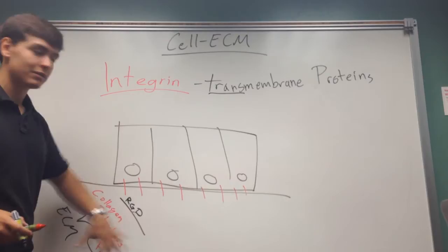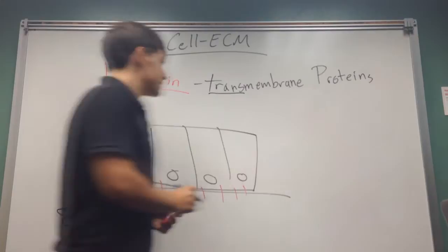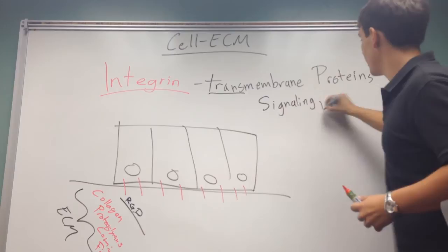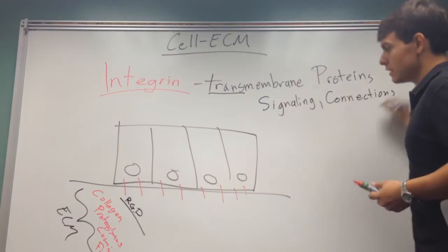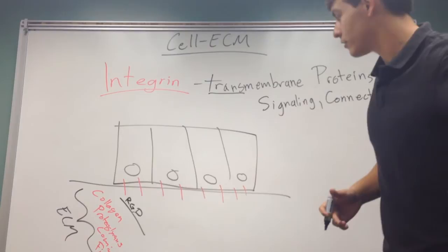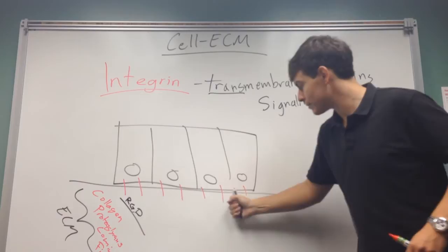But, integrin are transmembrane proteins that help signaling as well as just connection. So, collagen and fibronectin and laminin are all things that add strength to cells and what they can sit on, and they can grab onto it and connect with it and keep the cells in place.